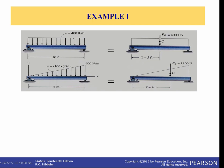This rectangular load of 400 pounds per foot is acting over 10 feet. Since this is a simple rectangle, the area under it, which equals the resultant force, is equal to 10 times 400 or 4,000 pounds. And since it's a rectangle, we know that its centroid is in the center, so its x-bar is 5 feet away from this end of the beam. These two systems are equivalent.